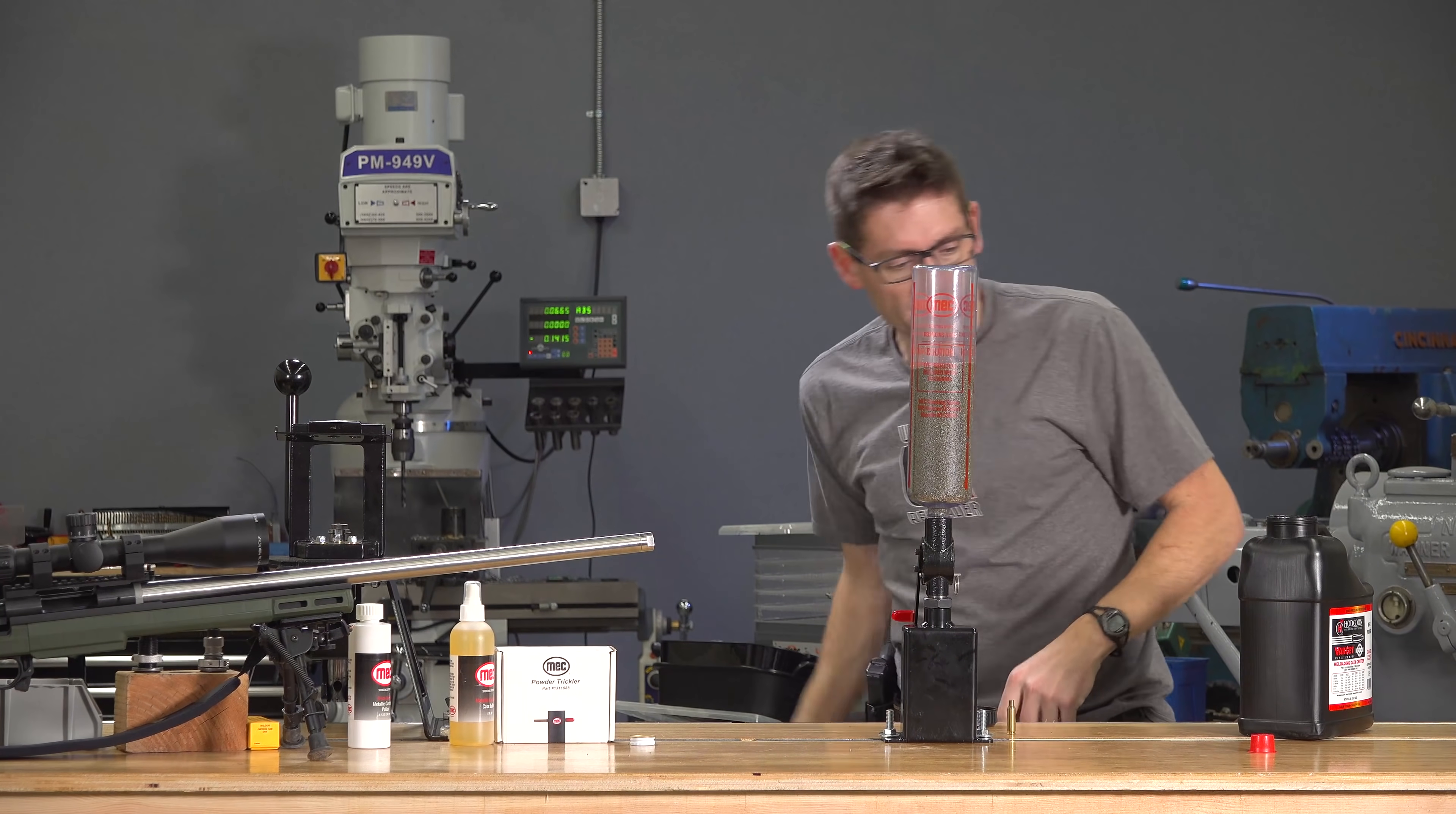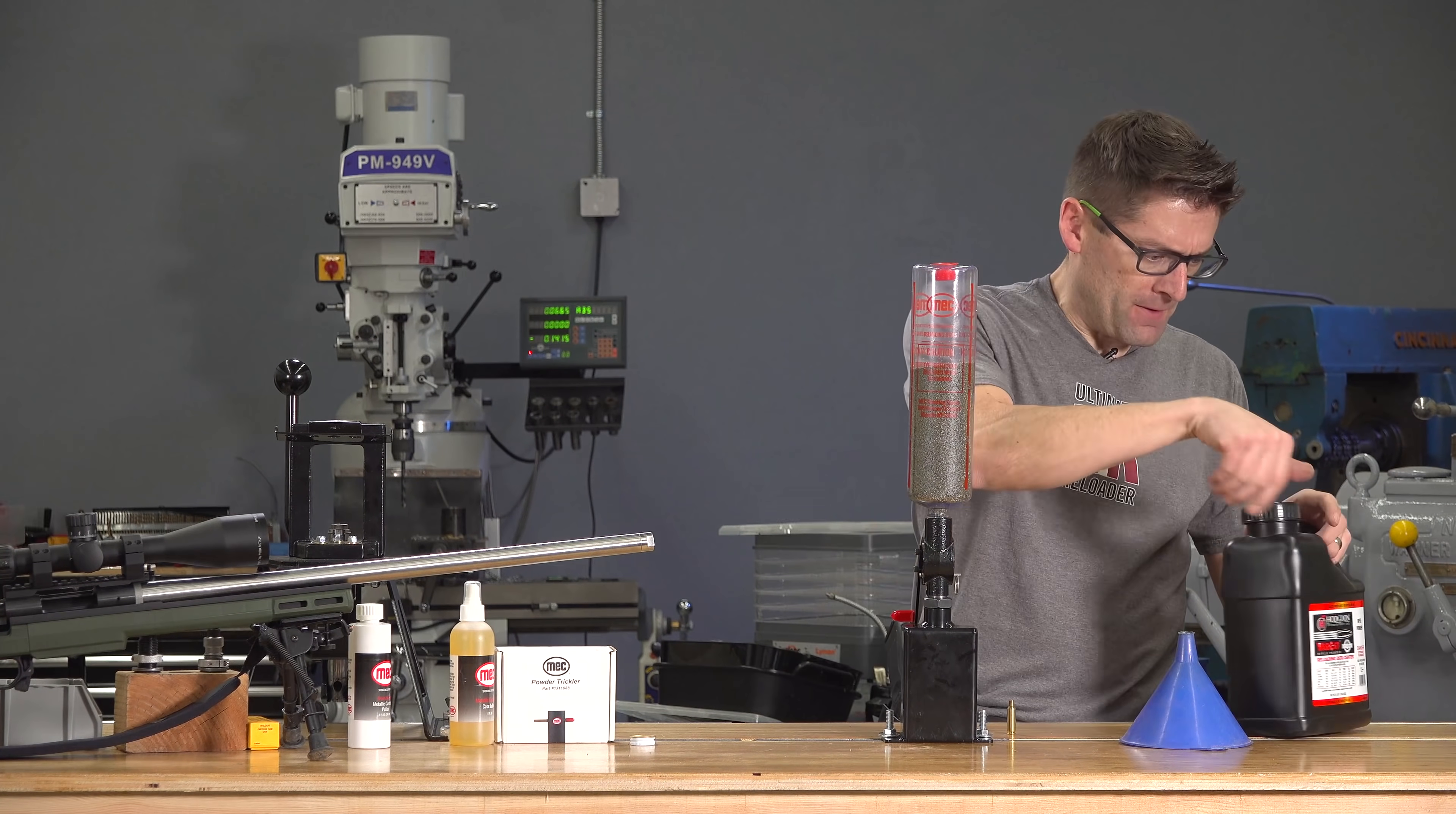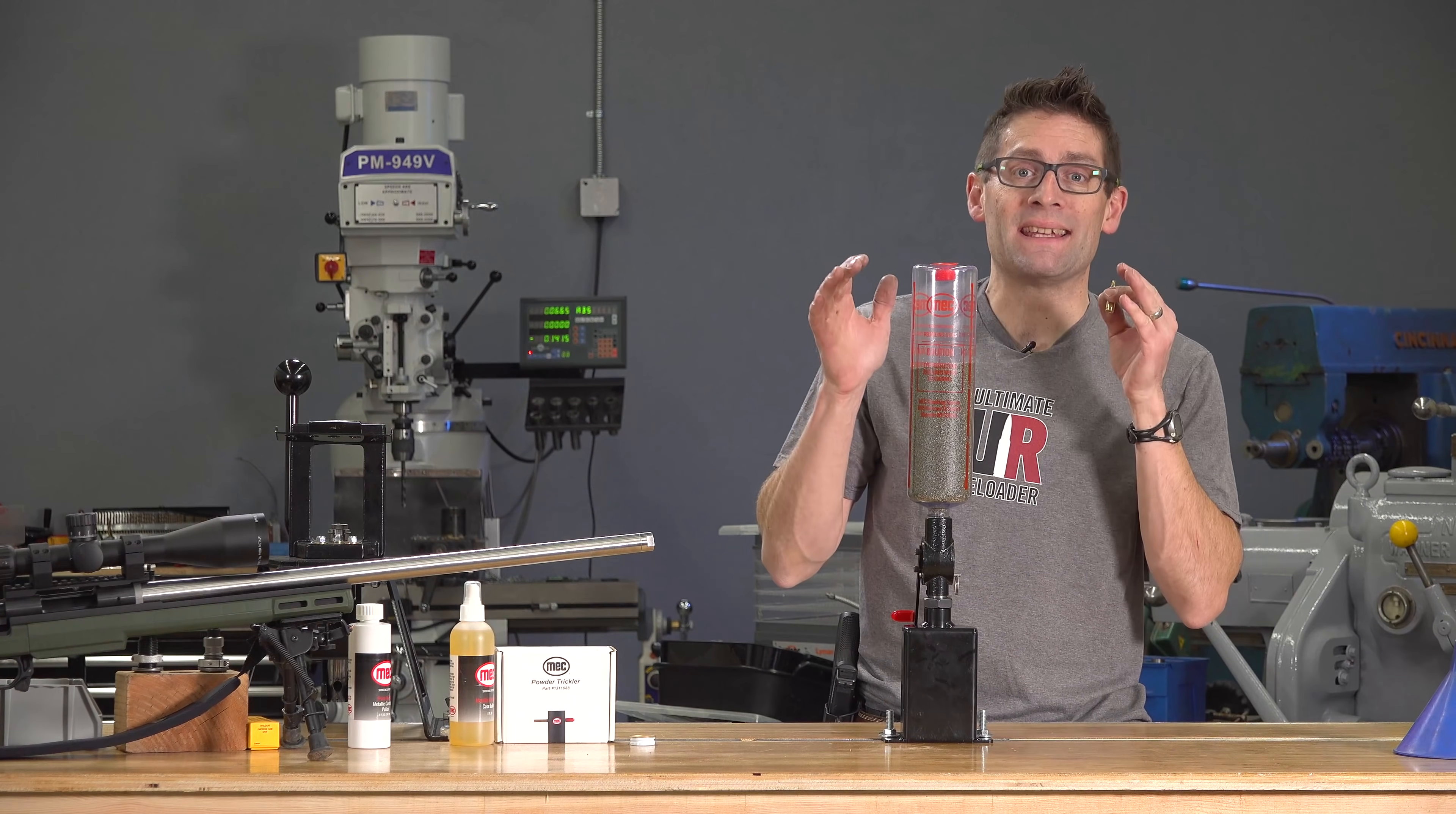Two pounds is insane. A little bit of static there. Okay. So, that's about all there is to it. Now, we can take a look at metering the Varget and see what kind of consistency we're gonna get.